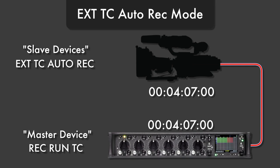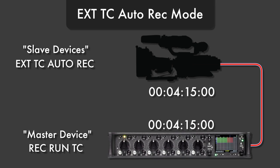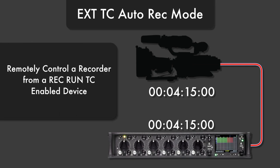When a device in this mode recognizes forward moving timecode, the device will automatically enter record mode. When forward moving timecode stops, the slave device will stop recording. This is very useful to remotely control a recorder from an external record run timecode enabled device.